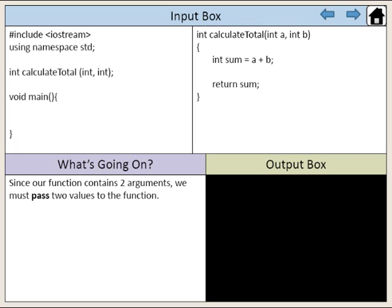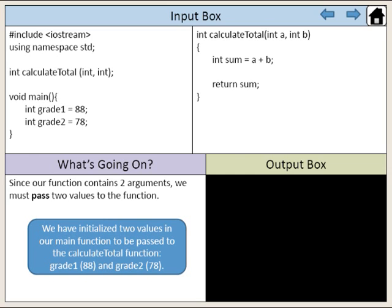Since our function contains two arguments, we must pass two values to the function. We have initialized two values in our main function to be passed to the calculateTotal function. Grade1, which has a value of 88, and grade2, which has a value of 78.